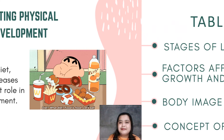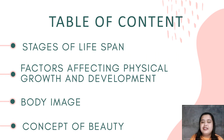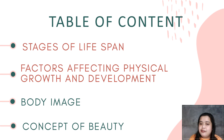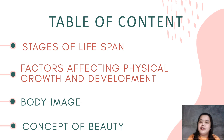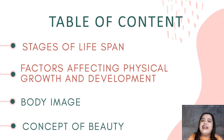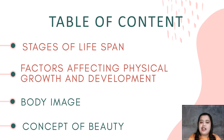So we have heredity, where we get our traits from our parents — passed on from one generation to another — and then we have the environment, where we're talking about our interactions. Now we've discussed the stages of lifespan and factors affecting physical growth and development. In our next video, we will discuss body image and concept of beauty.